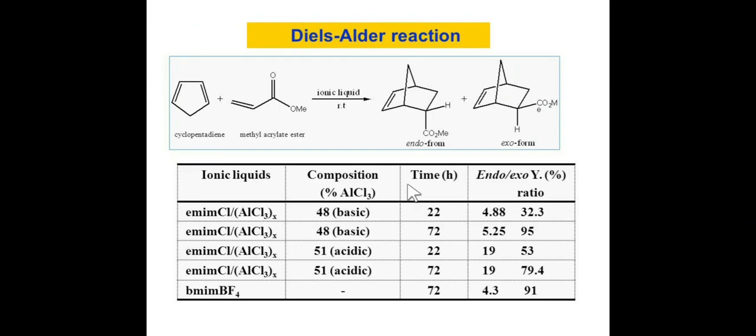The first reaction is Diels-Alder reaction. Some researchers have used ionic liquids for the transformation of cyclopentadiene and methyl acrylate ester into the Diels-Alder adduct. If we use ionic liquid at room temperature, we can carry out this reaction. If we use BMIMBF4 without any composition of AlCl3, we get 91% of endoproduct.